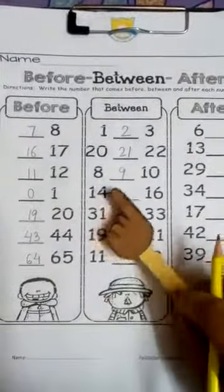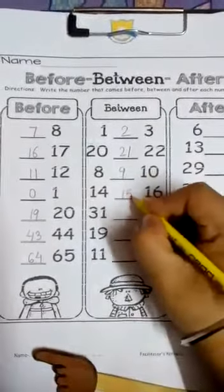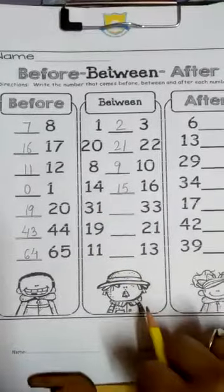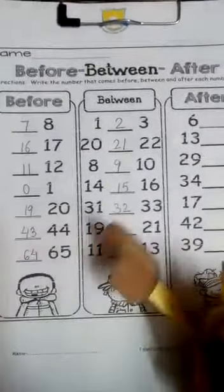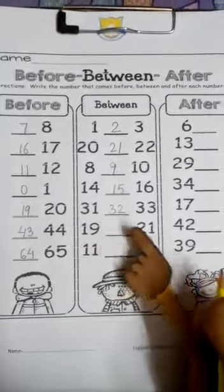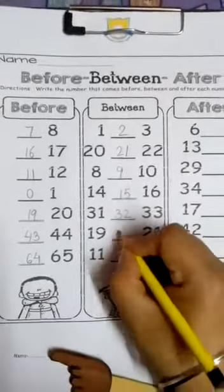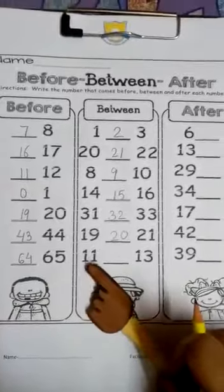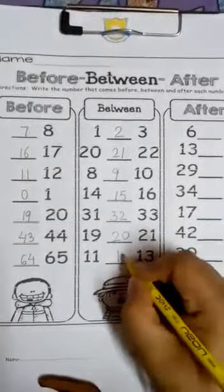What comes between 14 and 16? Yes, 15. What comes between 31 and 33? Write 32. Let's write 32. Let's see the next one. 19 and 21. What comes between 19 and 21? Yes, 20. Well done. Let's see the last one. What comes between 11 and 13? Yes, you write 12. Well done.